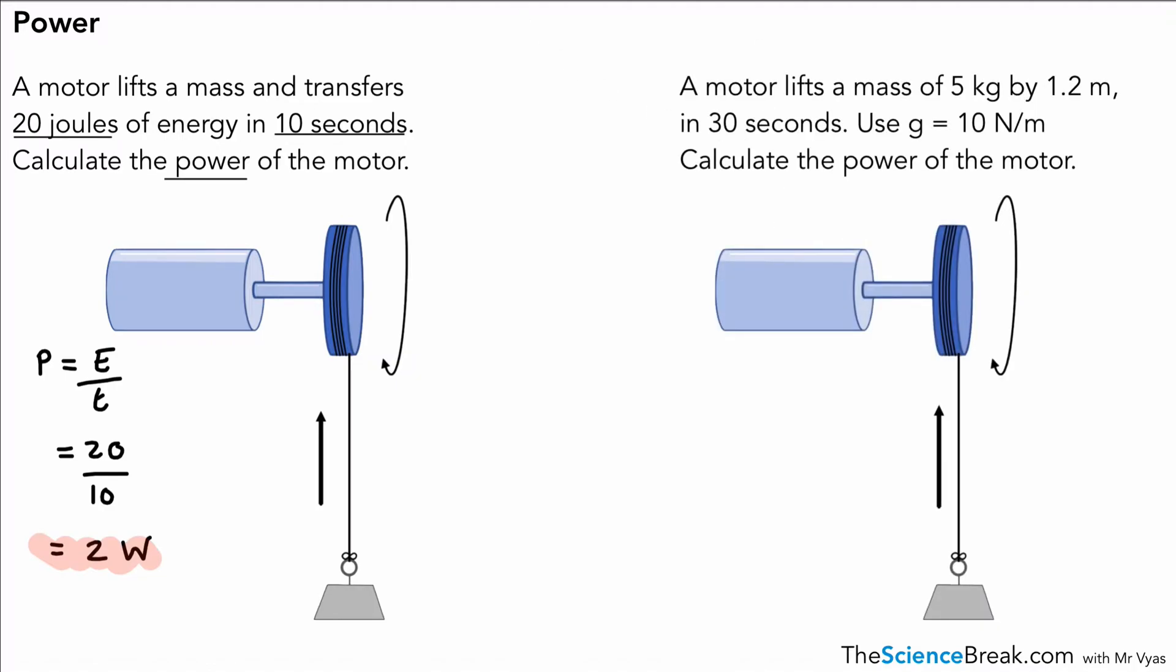The second one is less straightforward but uses the same equation, but we need to use a second equation as well. We've got a mass of 5 kg being lifted to 1.2 meters in 30 seconds, and we need to calculate the power. There's a little bit of a clue here, so they've given us g as 10. We need to calculate the power: power is energy transferred over time.